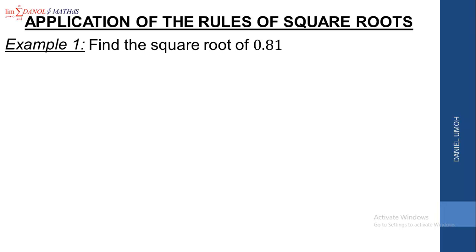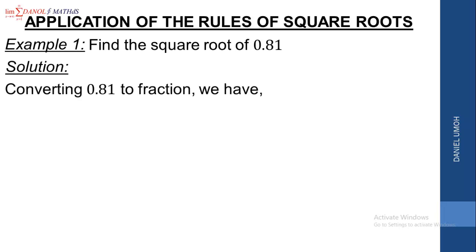0.81 is a decimal number, so the first thing we are going to do is convert this decimal number into a fraction. After the decimal point, we have two numbers, so 0.81 is in two decimal places. Converting it to a fraction, we divide by 100, giving us 81 over 100. If you check this with your calculator, 81 over 100 is the same thing as 0.81. So converting 0.81 to a fraction, we have 81 over 100.